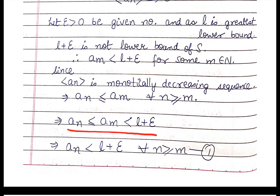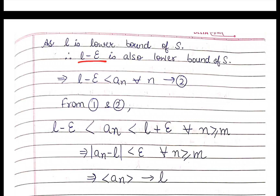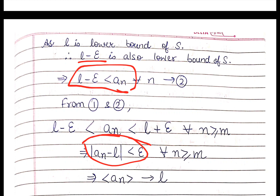We have L plus epsilon greater than or equal to a_n, and a_n is greater than or equal to L minus epsilon, since L minus epsilon is a lower bound of S. This gives us the absolute value of a_n minus L is less than epsilon, so a_n converges to L, the infimum. I hope that's clear. Thank you.